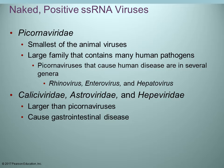With viruses, we don't use the terminology of genus and species, but we do have family names. There are different genera: the rhinovirus, the enterovirus, and the heptovirus. Larger than the coronaviruses are some additional families — three of them cause some gastrointestinal diseases.